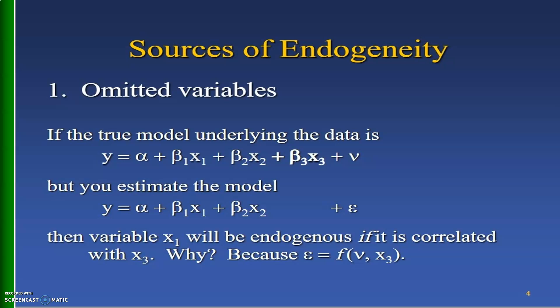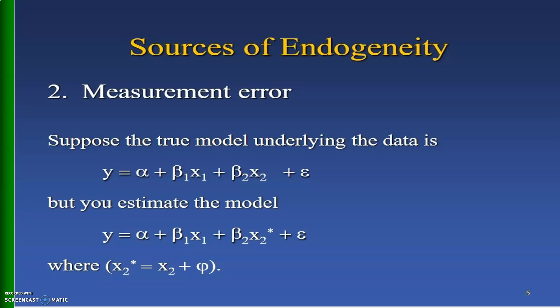The first source causing endogeneity is omitted variables. Suppose the true econometric model underlying the data is y equal to alpha plus beta_1 x_1 plus beta_2 x_2 plus beta_3 x_3 plus v, but instead we estimate the model y equal to alpha plus beta_1 x_1 plus beta_2 x_2 plus epsilon. In this case x_1 will be endogenous if it is correlated with x_3, because epsilon will be a function of v and x_3. So omitting a relevant variable from the model may cause endogeneity.